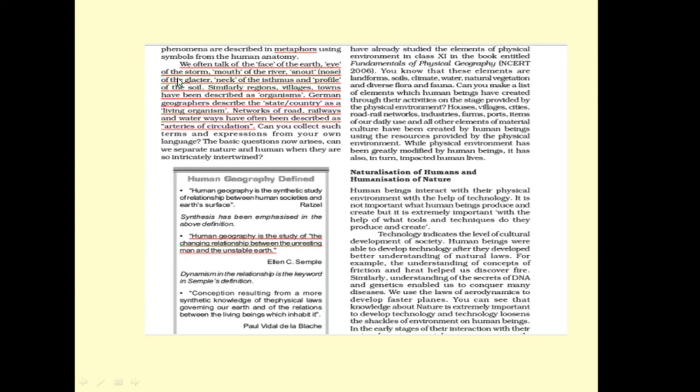Here, when we read this paragraph, you'll see that we talk of the face of the earth, eye of the storm, mouth of the river, snout or nose of the glacier, neck of the isthmus, and profile of the soil. All these are known as metaphors. In these lines, some physiographic structures have been compared with human body. Similarly, regions, villages, towns have been described as organisms. German geographers described the state or the country as a living organism. Some networks of road, railways, and waterways have often been described as arteries of circulation.